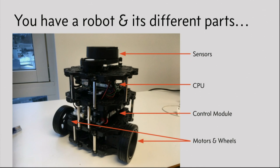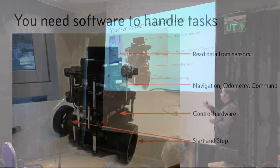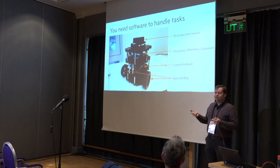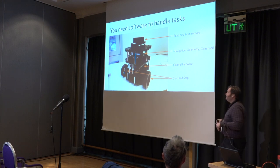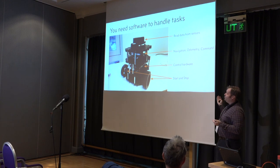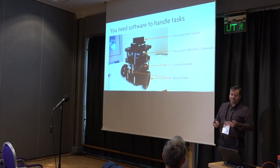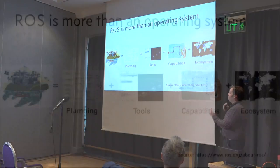This is all hardware just running by itself, so you need software to deal with all these things. You need something reading data from the LiDAR sensor, something to start and stop your motors and turn them, something to drive the control hardware. On the CPU, you need navigation to figure out where you want to go, something called odometry which tells you where you are at the moment, and commands to coordinate everything - like whether the LiDAR sensor is on and what its current value is. This is where ROS can come in.